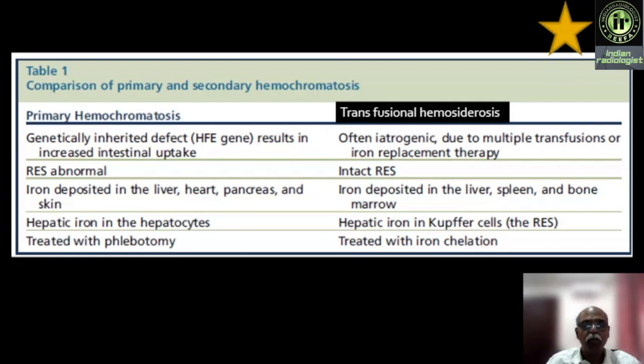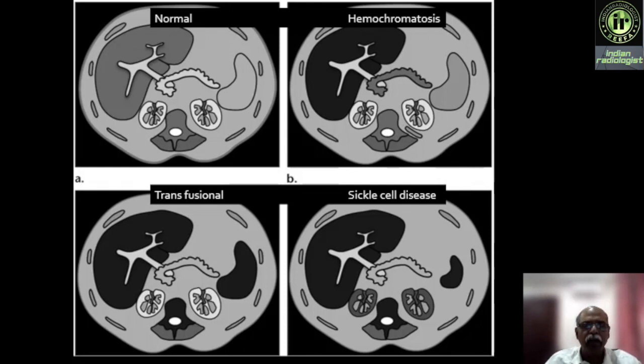These points are taken from a very important 2016 Radiographics article titled 'Hepatic Iron Overload: A Primer for Radiologists.' In normal hereditary hemochromatosis, the pancreas and liver are predominantly involved. In transfusional hemochromatosis, the liver, bone marrow, and spleen are involved. In sickle cell disease, the liver and bone marrow are involved, and the spleen goes into autosplenectomy — it is small, dysmorphic, and has low signal on T2.